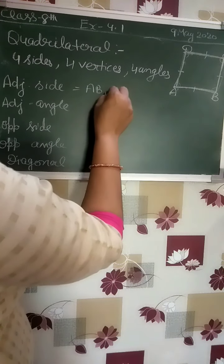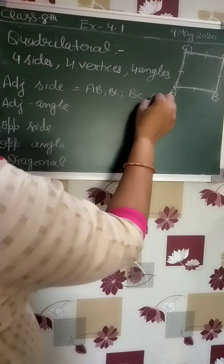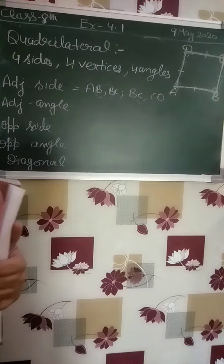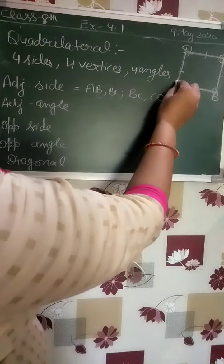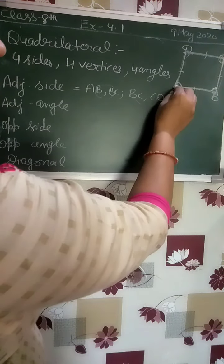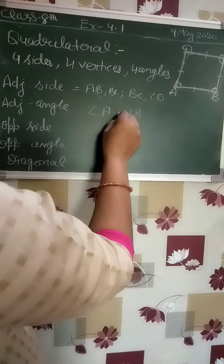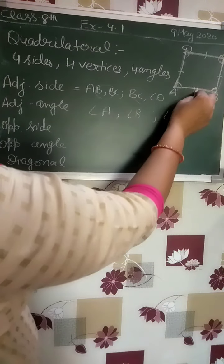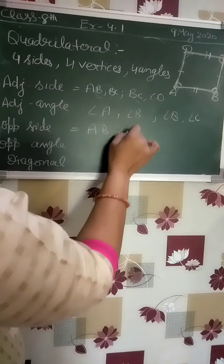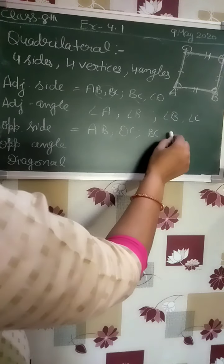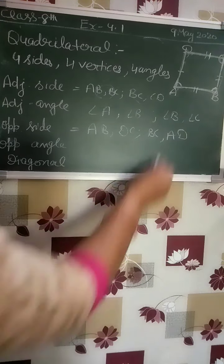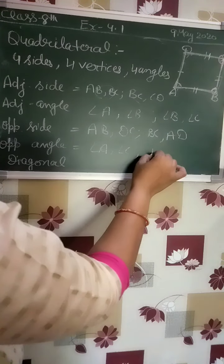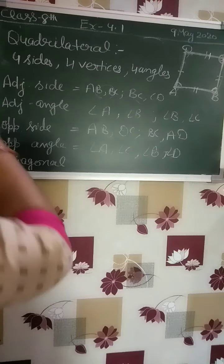Here I mention vertices A, B, C, D — the common vertex between two sides makes them adjacent. Adjacent angle: angle A is adjacent to angle B, and angle B is adjacent to angle C. For opposite sides: AB is directly opposite to DC, and BC is directly opposite to AD. These are opposite sides. Opposite angles: angle A is opposite to angle C, and angle B is opposite to angle D.